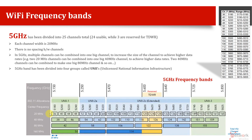The channel numbers start from 36, 40, 44, 48, and so on. The 5 GHz band is divided into 4 groups called UNII — Unlicensed National Information Infrastructure — Group 1, Group 2A, Group 2C, and UNII Group 3. So there are totally 4 groups, and these define the frequencies where each group starts and ends.